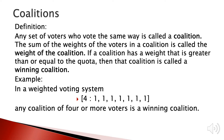Now let's introduce the coalition. Any set of voters who vote the same way is a coalition. Every voter in the coalition may have some weights, so the weight of the coalition is the sum of the weights of the voters in it. If the weight of the coalition is greater than or equal to the quota, the voting system can pass a resolution and the coalition is called a winning coalition. For example, in this weighted voting system any coalition of four voters can form a winning coalition.